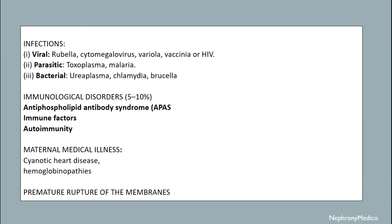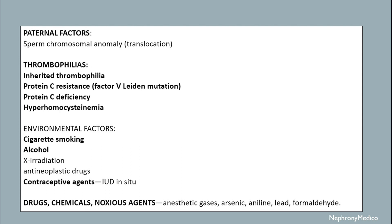Another etiological factor includes premature rupture of the membranes. Paternal factors include sperm chromosomal anomaly. Thrombophilias like inherited thrombophilia and protein C resistance are also contributing factors.